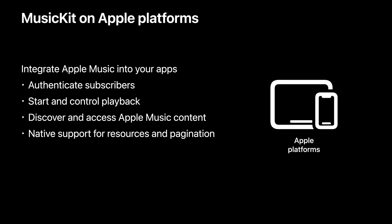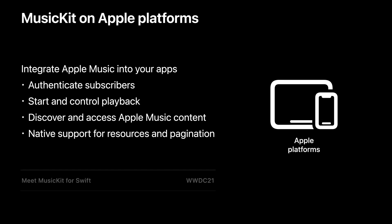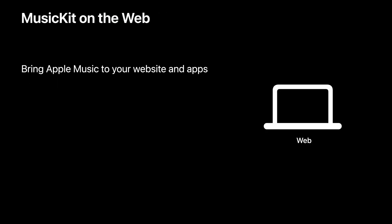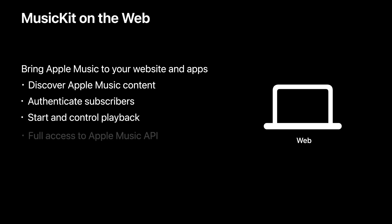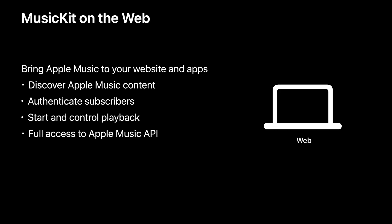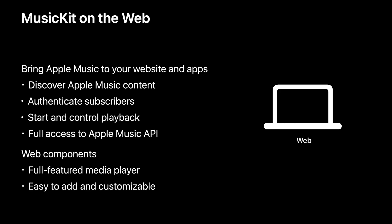Developers writing apps for Apple platforms are encouraged to watch the session Meet MusicKit for Swift for an introduction to those APIs, and the session Explore More Content with MusicKit for more functionality. MusicKit on the web makes it easy to bring Apple Music to your applications using JavaScript. You can discover Apple Music content, let subscribers sign in to access personalized features, and play content directly on your website. Full access to Apple Music API gives you the power to create unique music experiences. MusicKit provides a collection of built-in web components, including a full-featured media player. These components make it easy to get started and have the flexibility to customize for your experience.